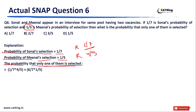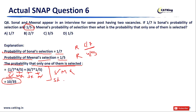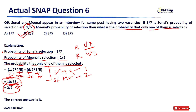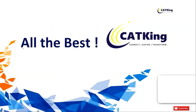There are two cases: Case 1 — Sonal is selected and Meanel is not: (1/7) × (4/5). Case 2 — Sonal is rejected and Meanel is selected: (6/7) × (1/5). Adding both cases: (1/7 × 4/5) + (6/7 × 1/5) = 4/35 + 6/35 = 10/35 = 2/7. Hence the correct answer is Option B: 2/7.